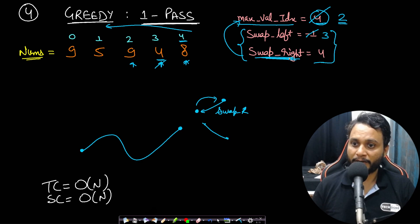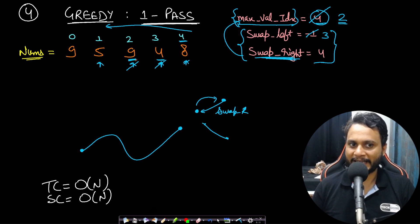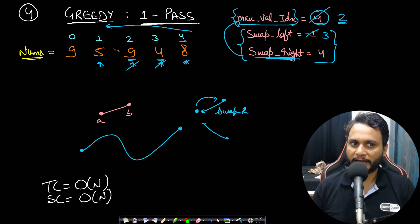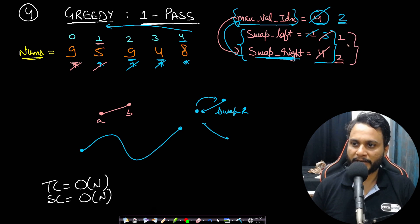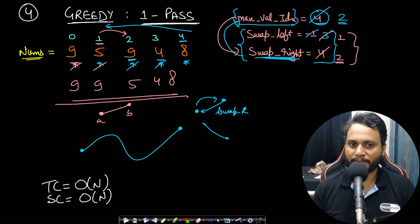Continuing the greedy pass: at index 1 (digit 5), compare with max value index value 9 — 5 is smaller, so this is a valid pair. Update swap_left to 1 and swap_right to max value index 2. At index 0 (digit 9), 9 is not smaller than 9, so we do nothing. After the full pass, swap_left is 1 and swap_right is 2. Swapping gives 99548, which is the maximum possible. Time complexity is O(n) and space complexity is O(n).